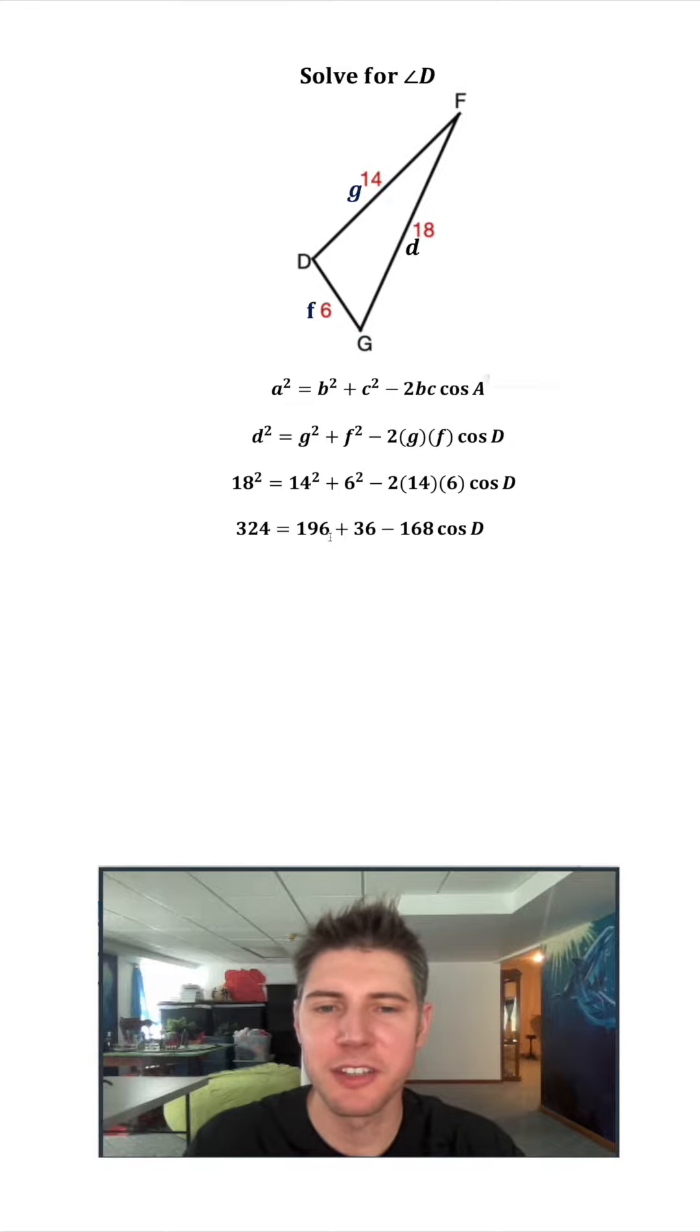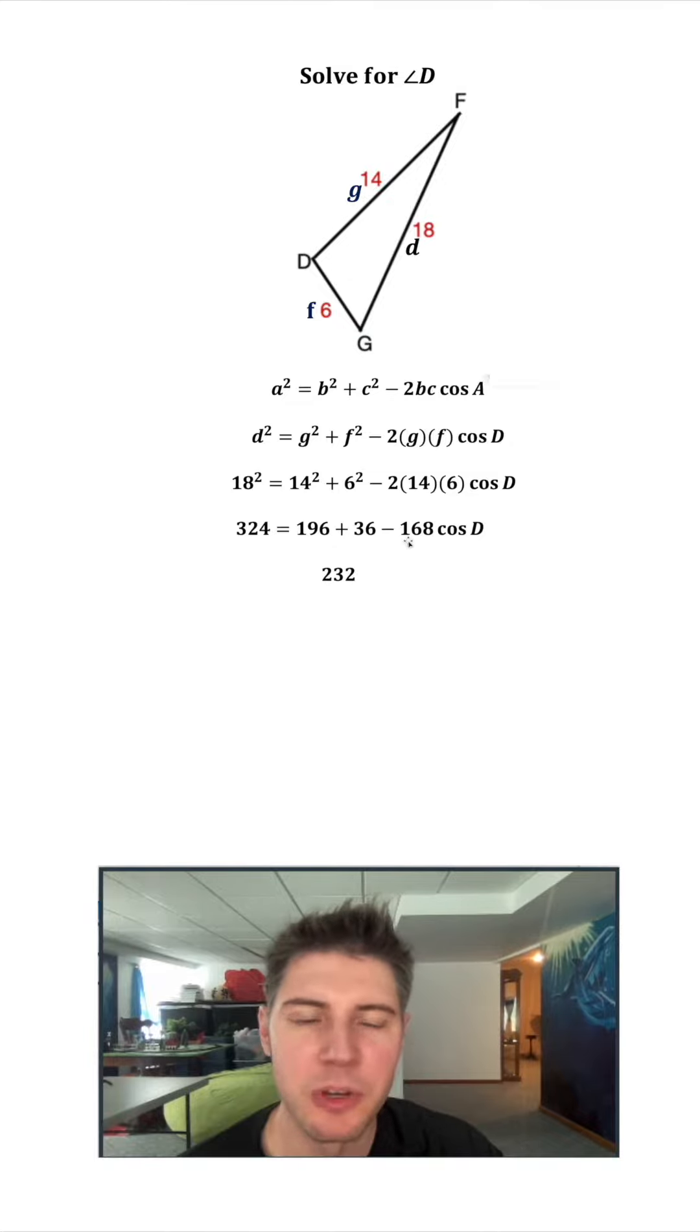196 plus 36, that's equal to 232. The reason we didn't also do this minus 168 is it's attached to the cosine D. So we can't combine these three terms. We're stuck with just these two terms. We'll deal with the 168 later. So then we'll bring down everything else.